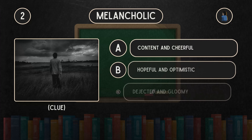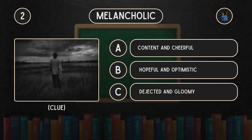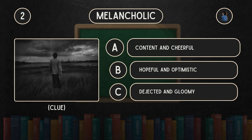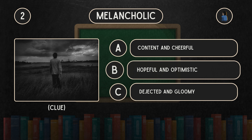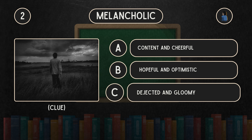What does melancholic mean? Is it A: Content and cheerful. B: Hopeful and optimistic. C: Dejected and gloomy.